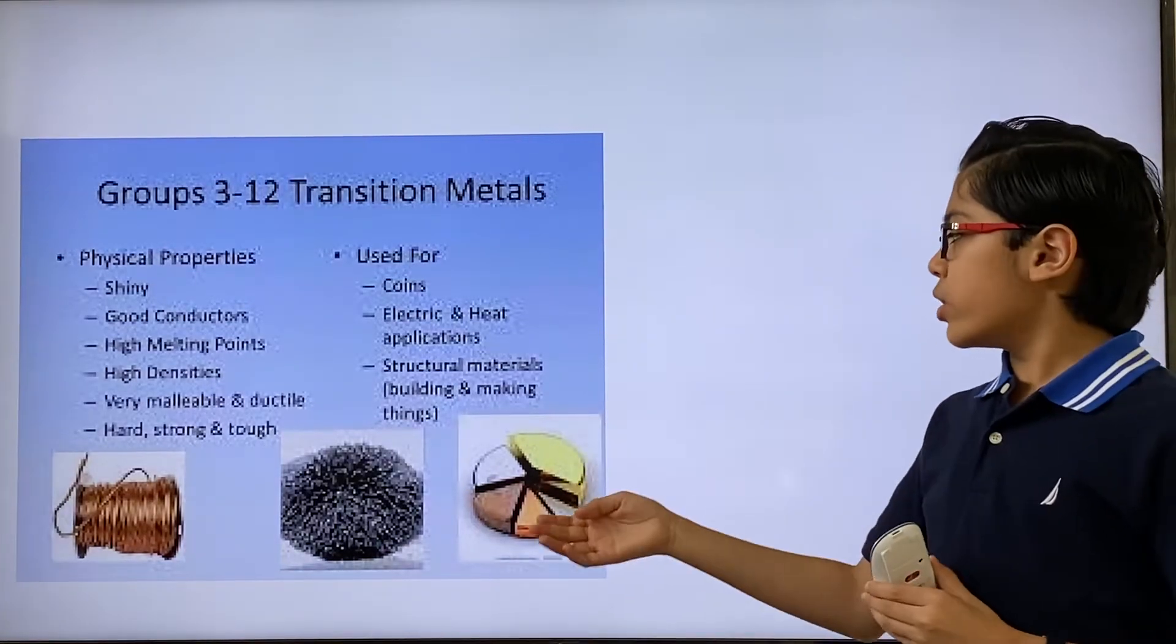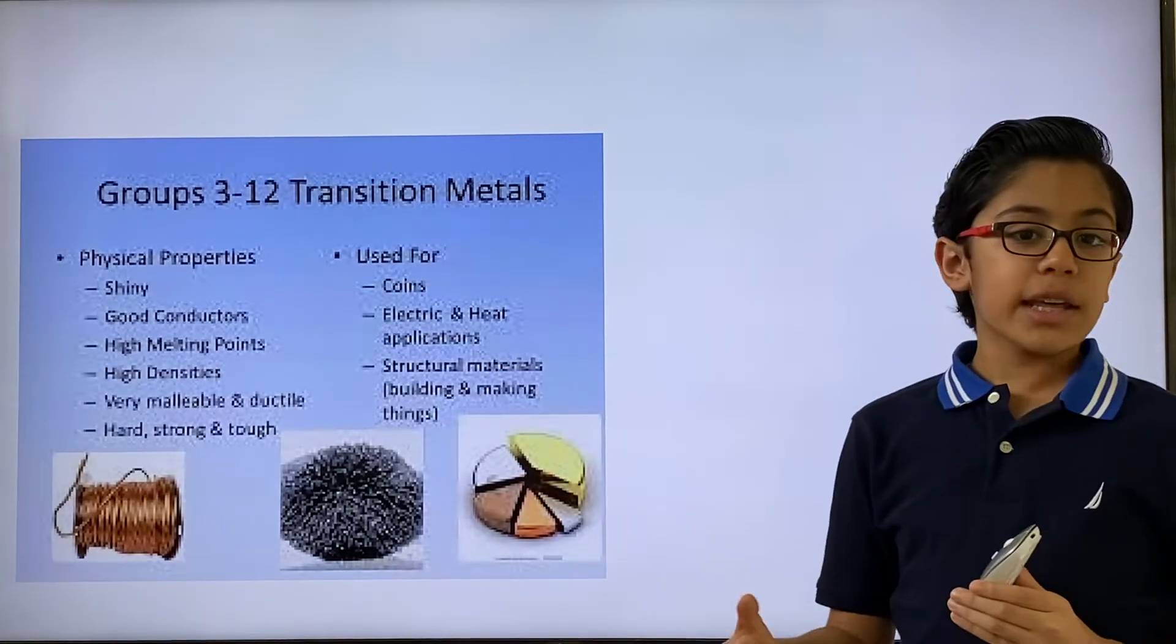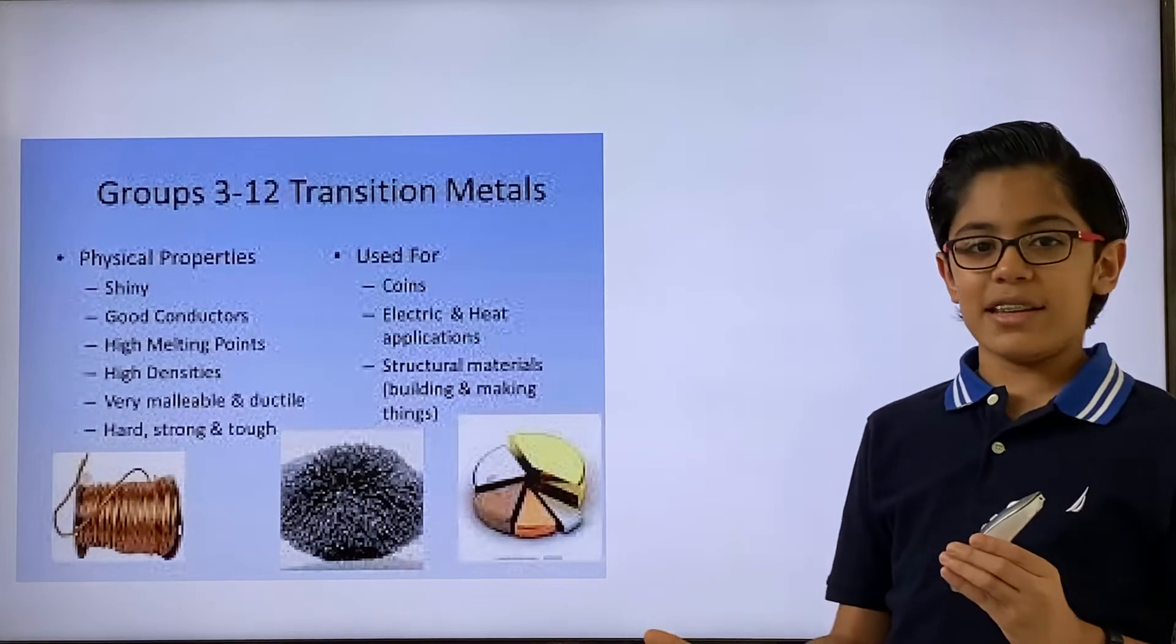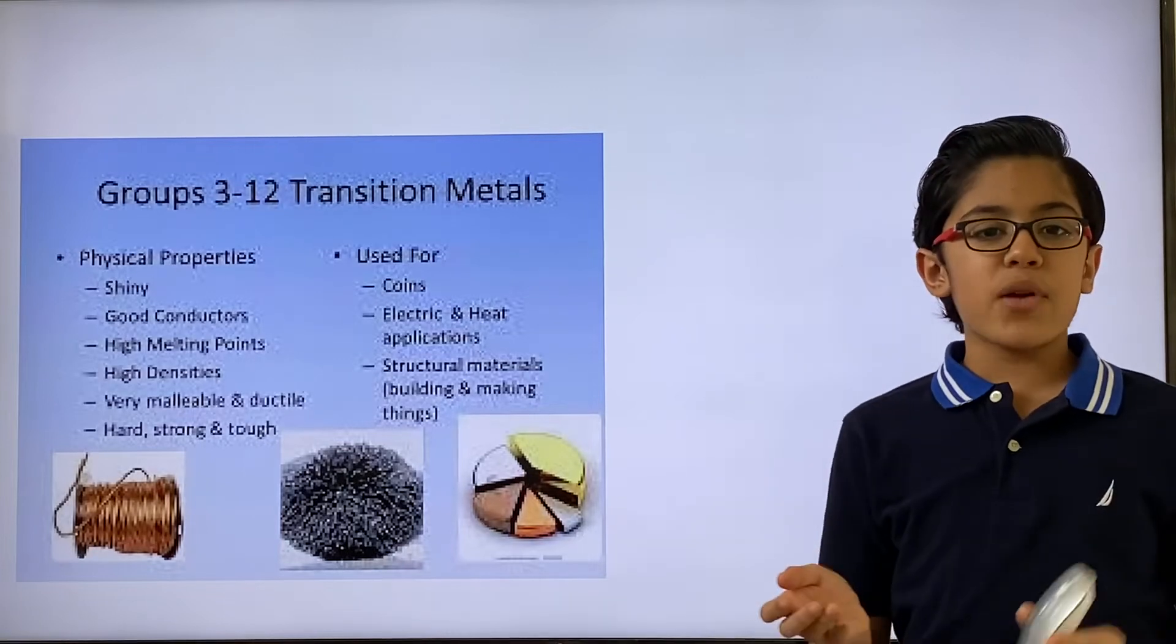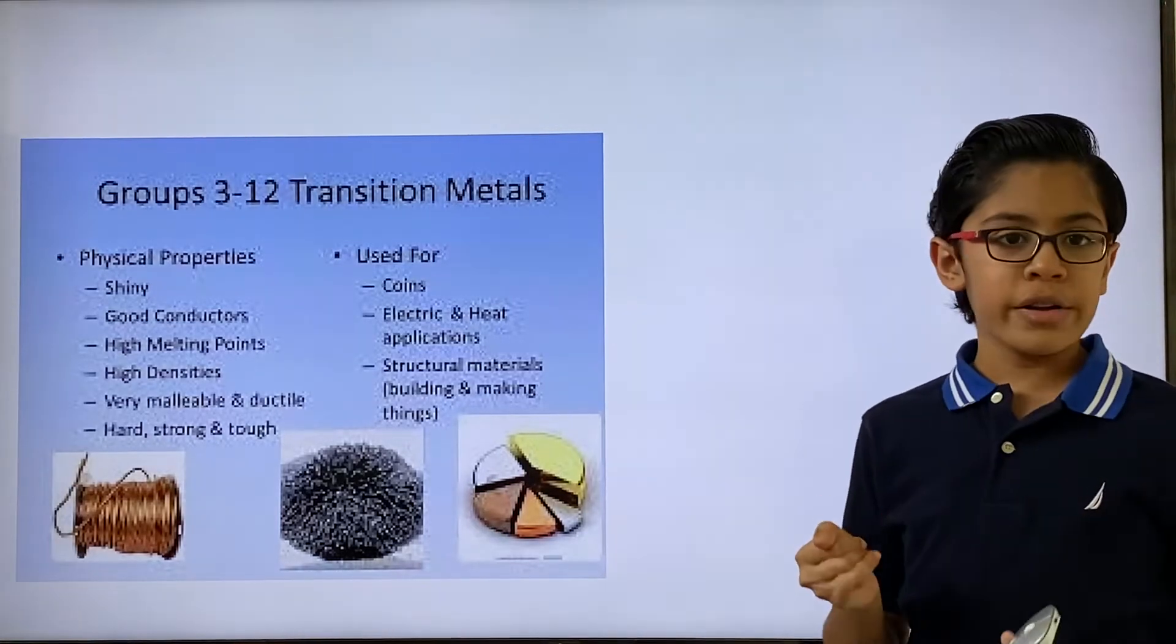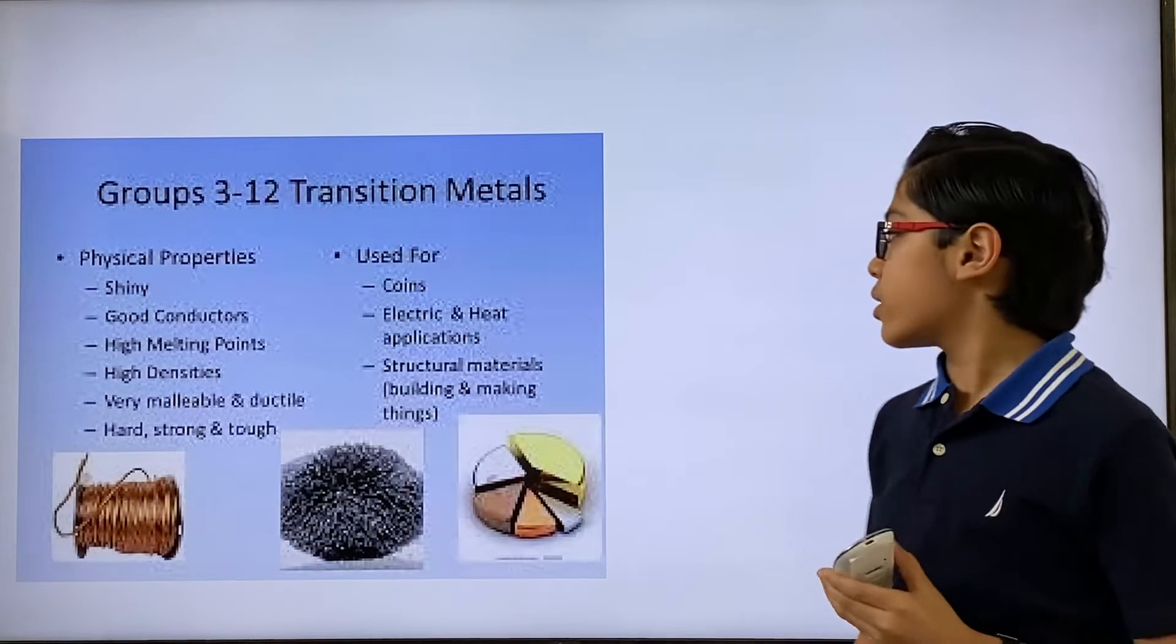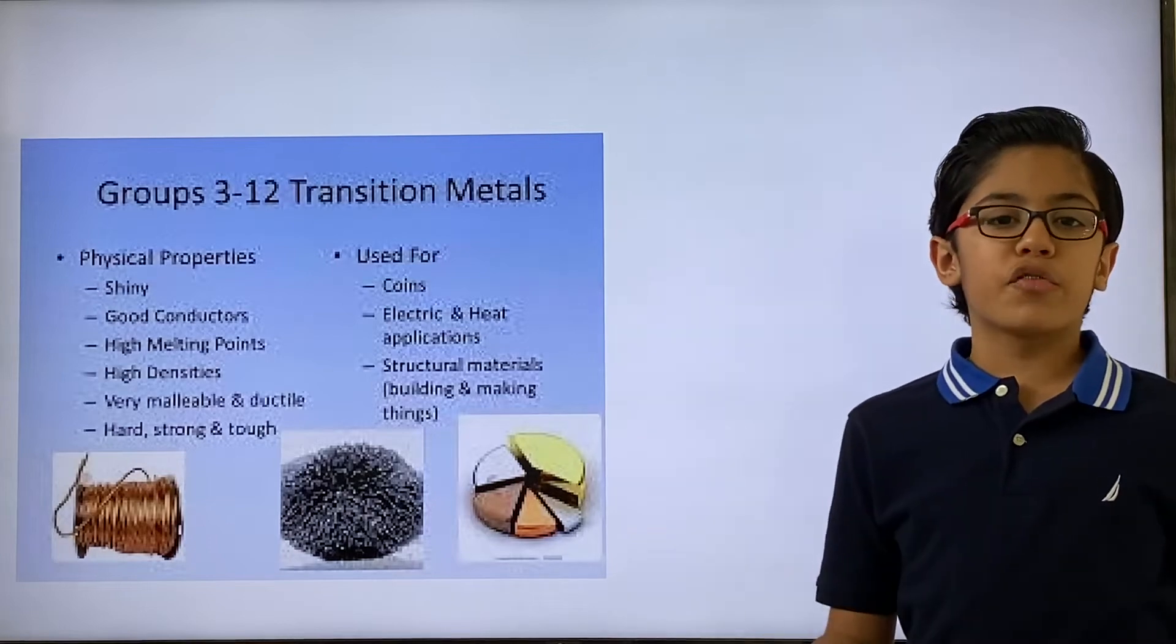This picture basically shows what are the main properties of transition elements. You can see the physical properties. They're shiny because they're metals. They're good conductors because they're metals. They have high melting points because they're metals. They have high densities because they're metals. Some of them are malleable and ductile, such as gold, which means they're easily pressed into new shapes. Because they're all metals, most of them are very hard, strong, and tough when alloyed with the right element. They're used for coins, electric and heat applications because they're very good conductors, structural materials because they're strong, and they're just overall good for building and making things.